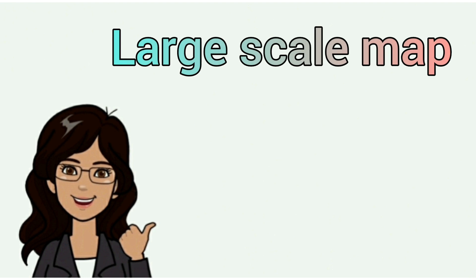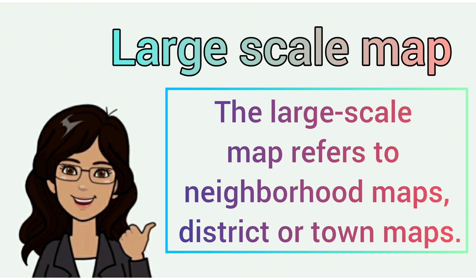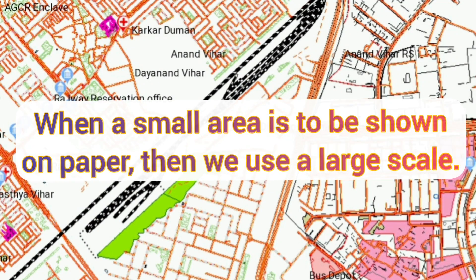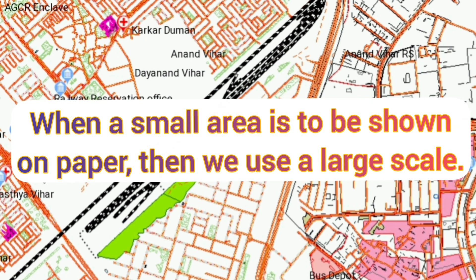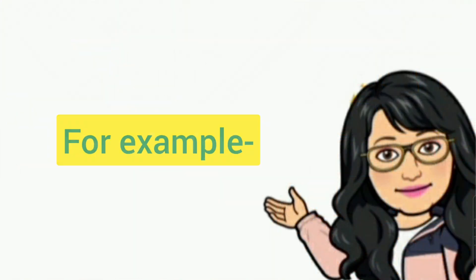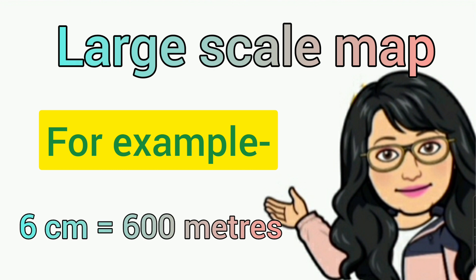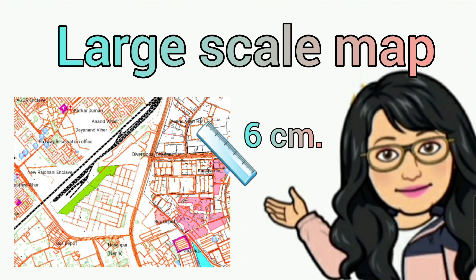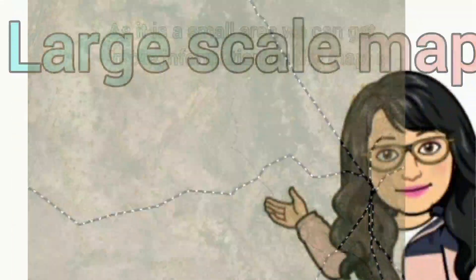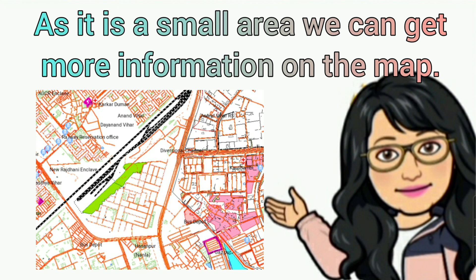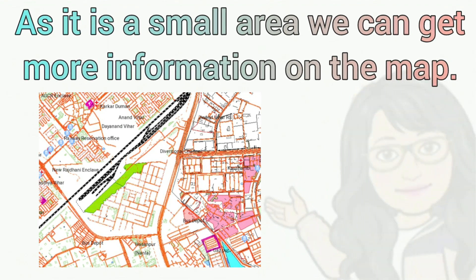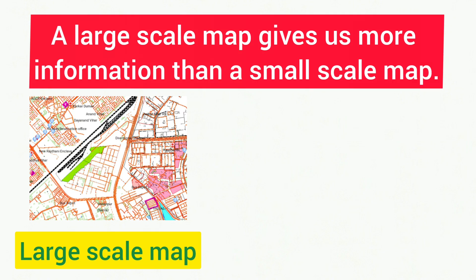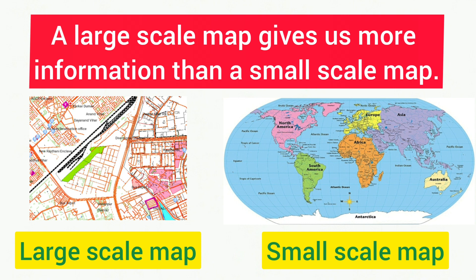Now, the large scale map refers to neighborhood maps, district or town maps. In other words, when a small area is to be shown on paper, we use a large scale. For example, 6 cm equal to 600 meters, meaning 6 cm on the map shows 600 meters on the ground. As it is a small area, we can get more information on the map. Hence, you can conclude that a large scale map gives us more information than a small scale map. I hope the difference between small scale and large scale maps is clear to you.